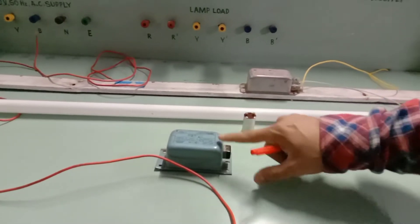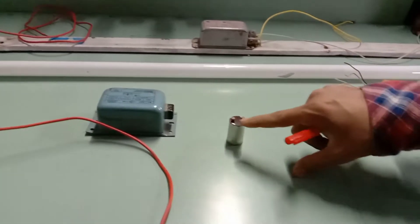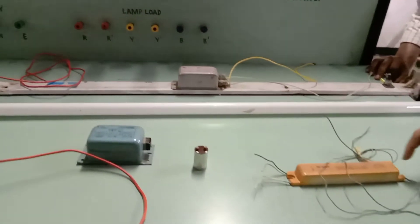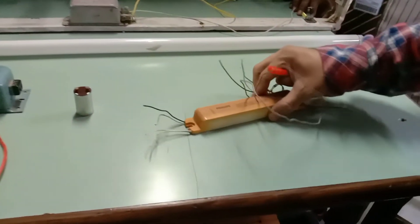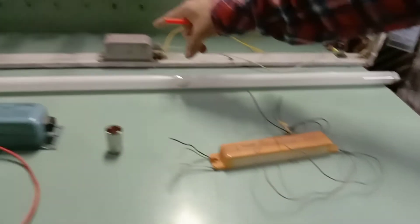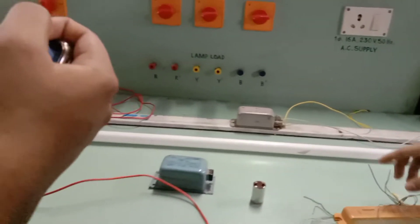Which is of electromagnetic type. This is the choke. Then this is the starter. And nowadays this electronic type starter is used. Commonly it is known as the ballast. Now we will see the on earth setup.